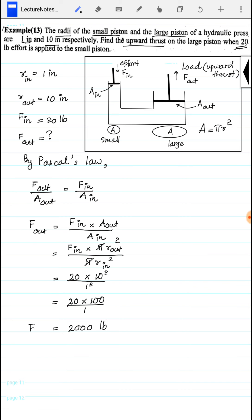Therefore, F_out equals 2000 pounds. This is the upward thrust on the large piston.